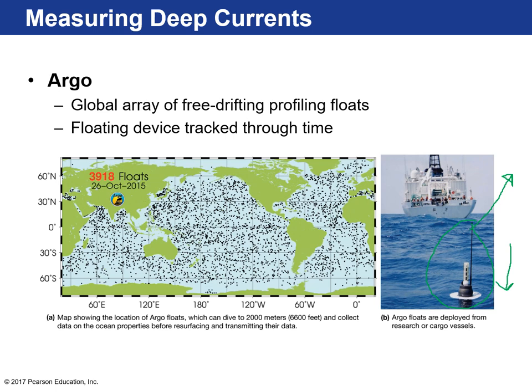Presently, the Argo program has about 25 deep water floats that can reach down to about 6,000 meters — almost three times as deep as the initial project. That allows oceanographers to look at deep ocean currents 6 kilometers deep, record pH, temperature, and other variables, and understand how our global ocean system circulates and whether any changes are occurring.